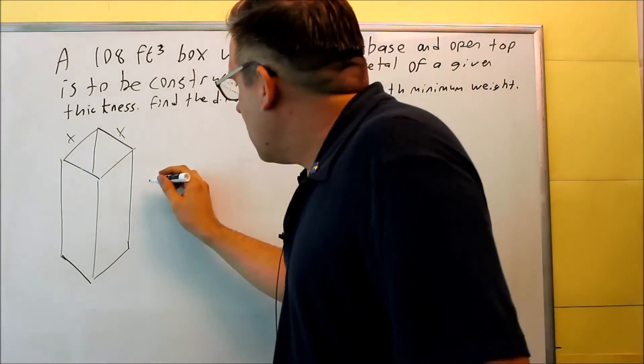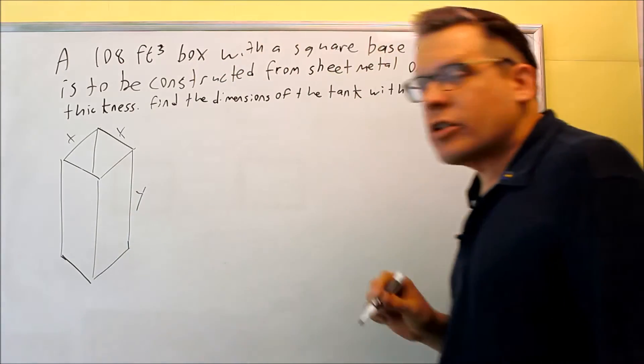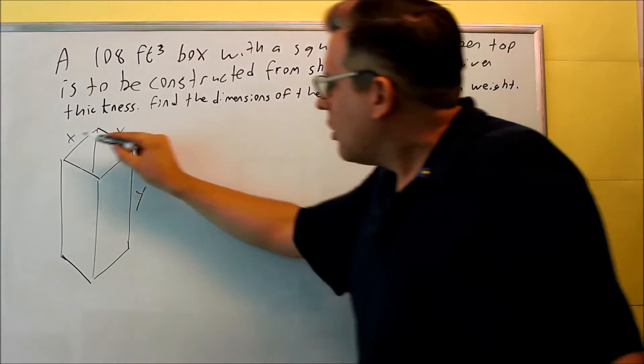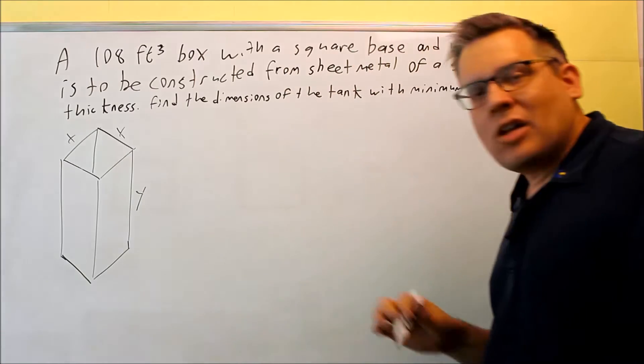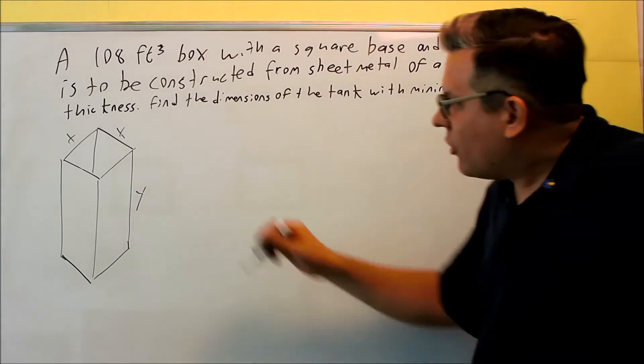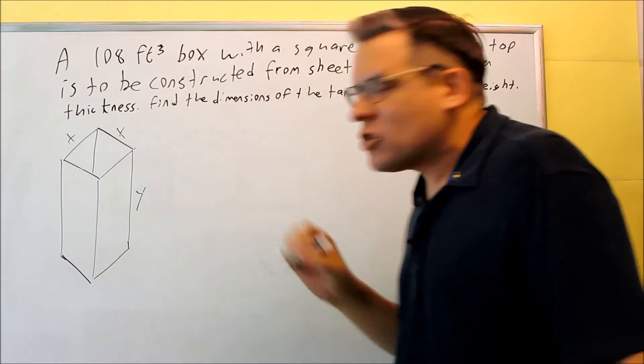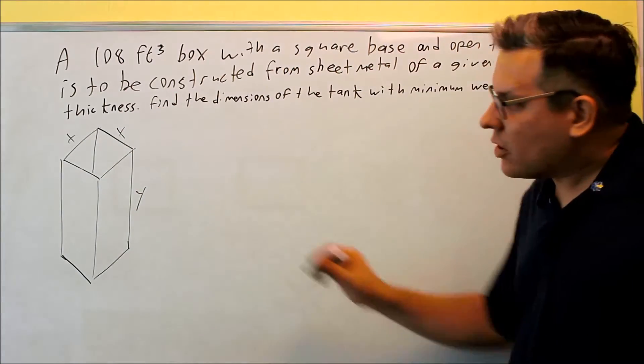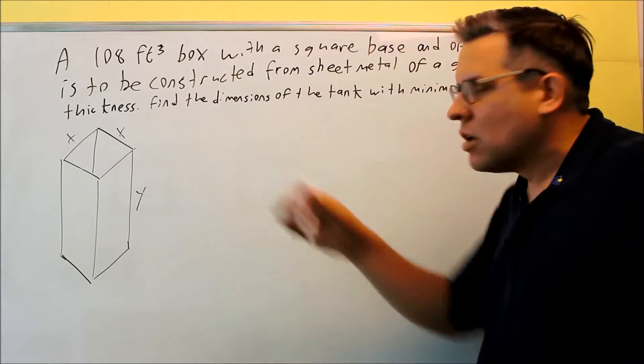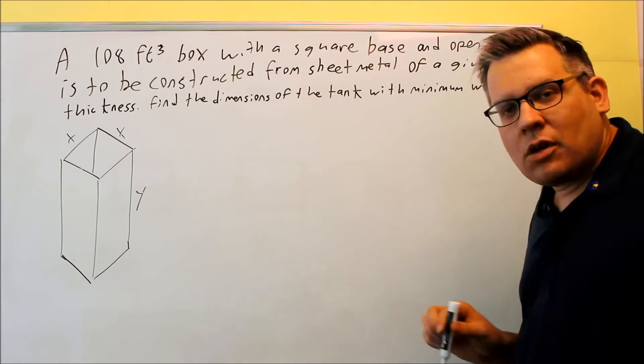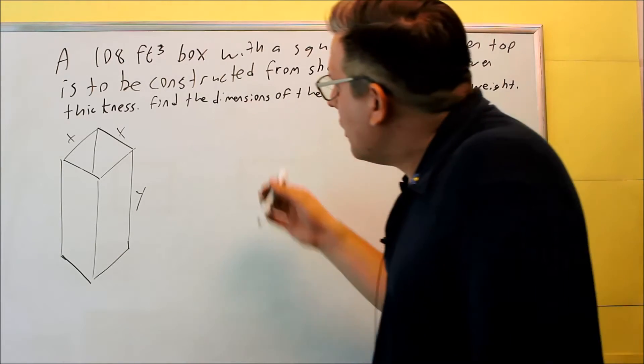So this is X, and then I'll make this Y. Now of course, if you wanted to change the variables around, it really doesn't matter how you want to do that. Or if you want to do length, width, and height, of course these will both be the same, so you want to use the same variable no matter what because it's a square base. So I'm going to use X's and Y's, but you might use some other variable, it doesn't matter.